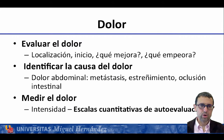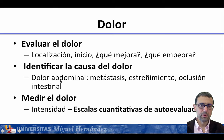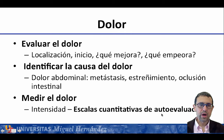¿Cómo evaluamos el dolor? Hay una escala clásica que es la escala SOCRATES para evaluar el dolor. Valoramos la localización del dolor, cuándo comienza, qué lo mejora, qué lo empeora. También identificamos la causa: si es un dolor abdominal, por ejemplo, si es por una metástasis hepática, por estreñimiento, oclusión, suboclusión intestinal o compresión de una víscera. Hay que medir también la intensidad mediante escalas cuantitativas de autoevaluación en el paciente oncológico.